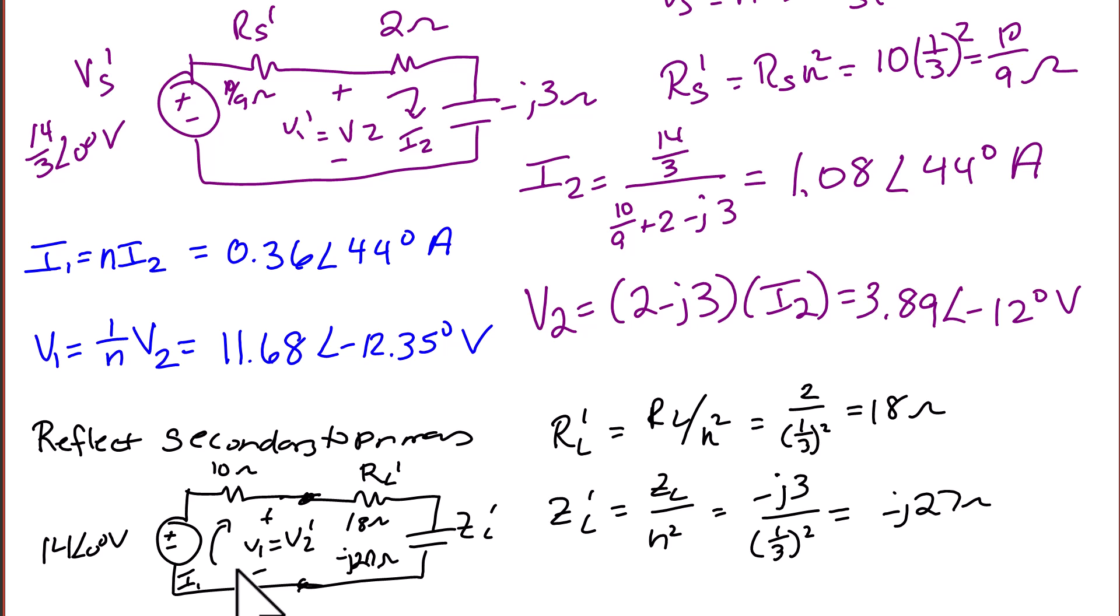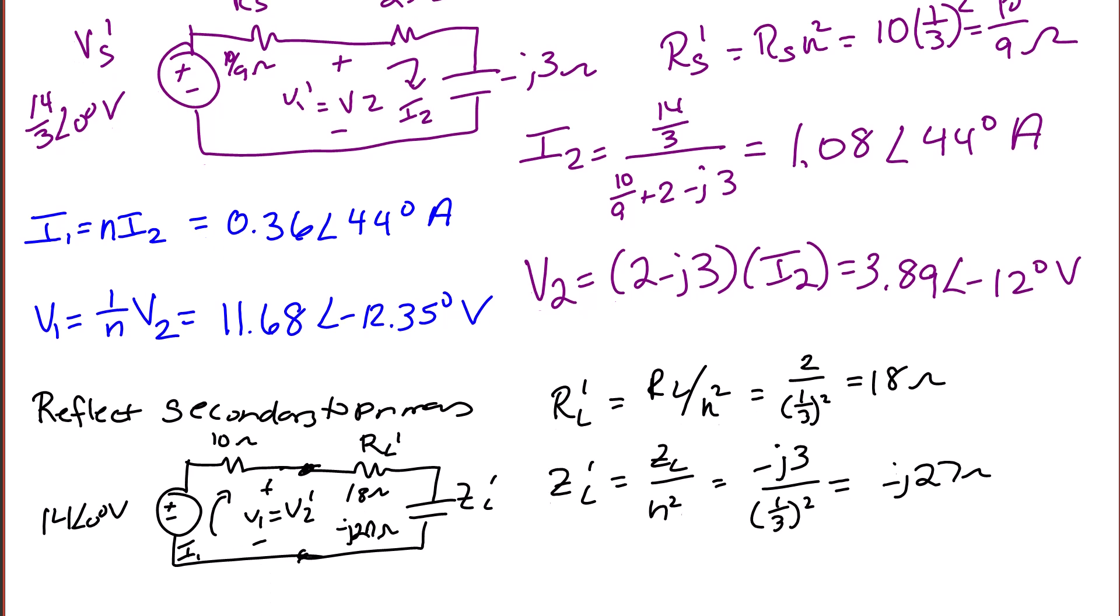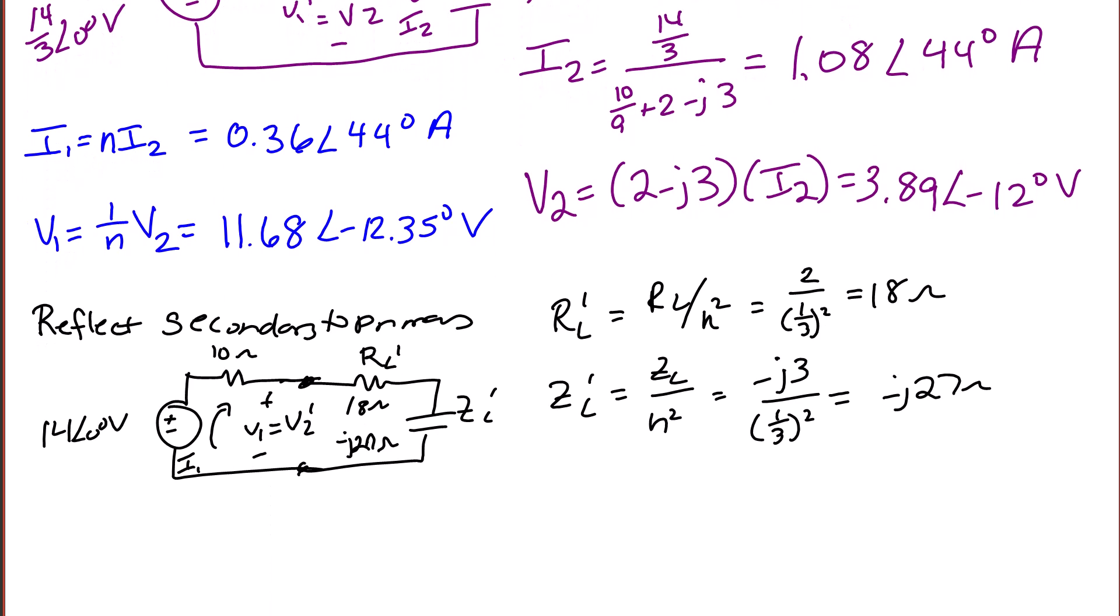I1 is equal to 14 over 10 plus 18 minus J27. So I1 is equal to 0.36 with an angle of 44 degrees, exactly what we got before.